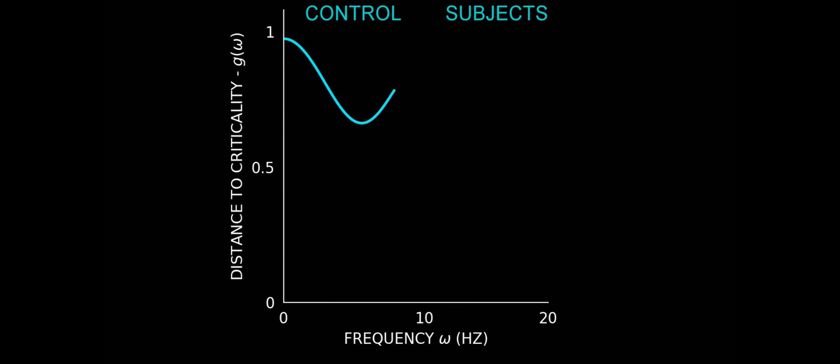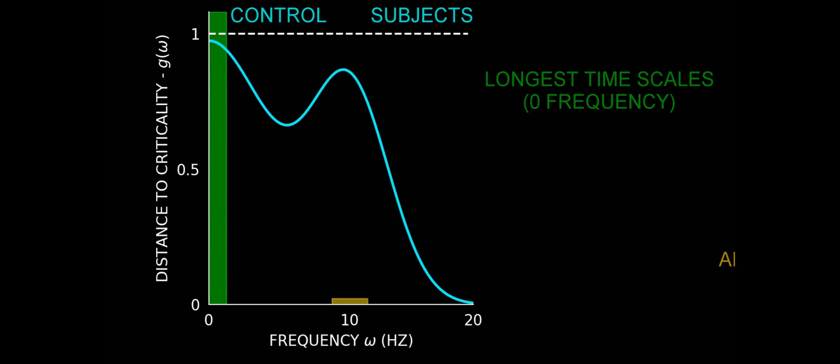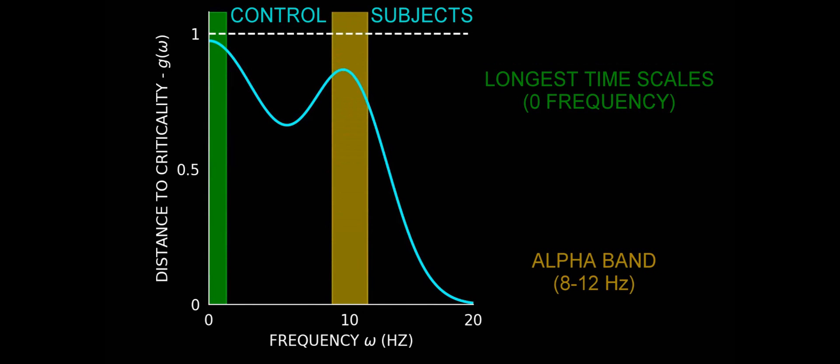We did this and found out that the time scales that are closer to a critical in healthy subjects are the longest time scales, together with the so-called alpha band, an interval around 8-12 Hz.